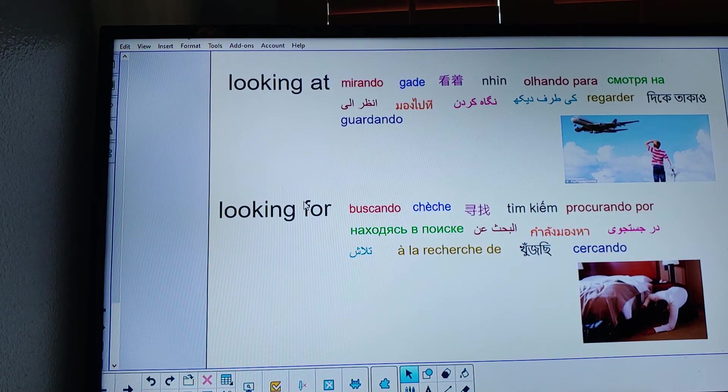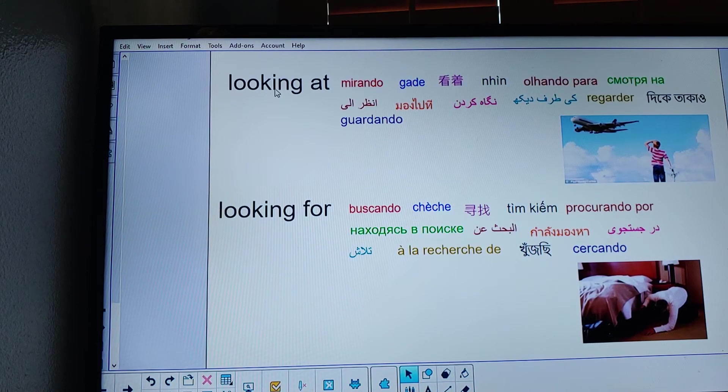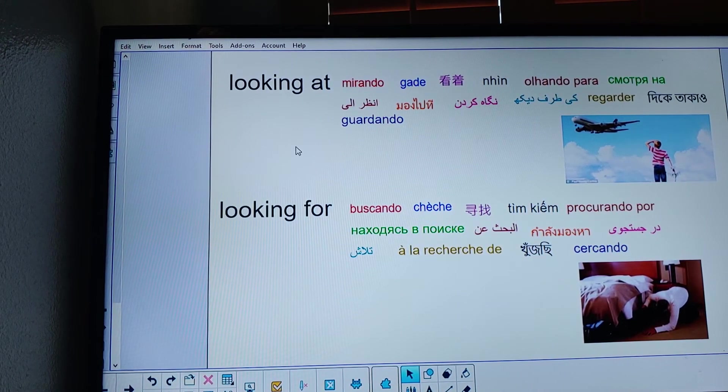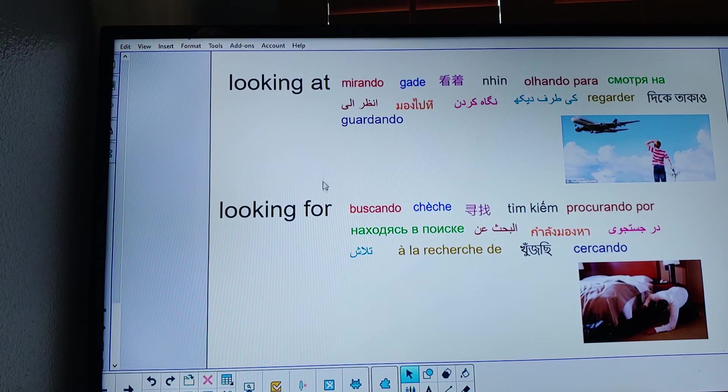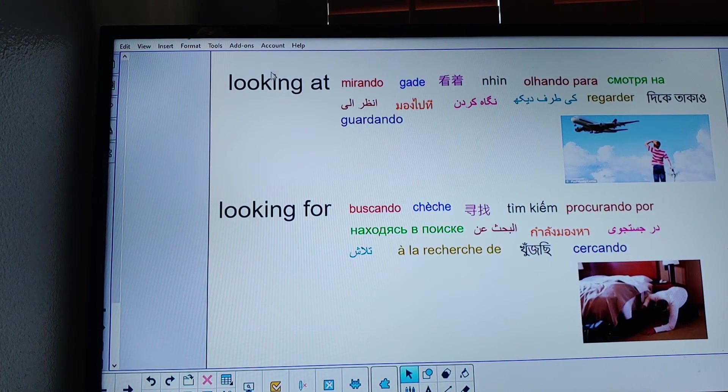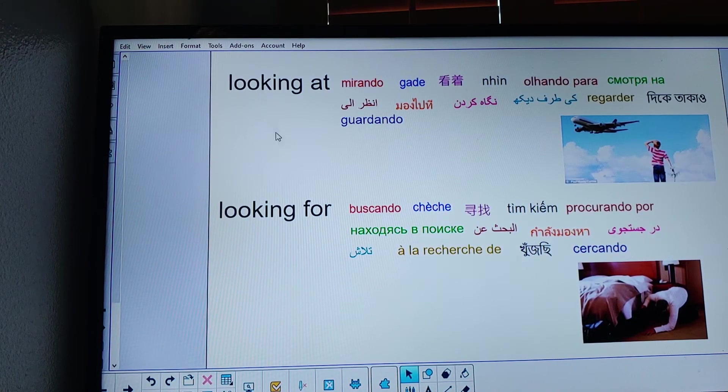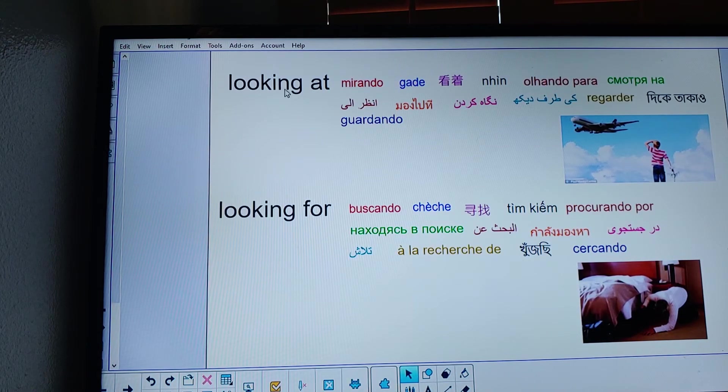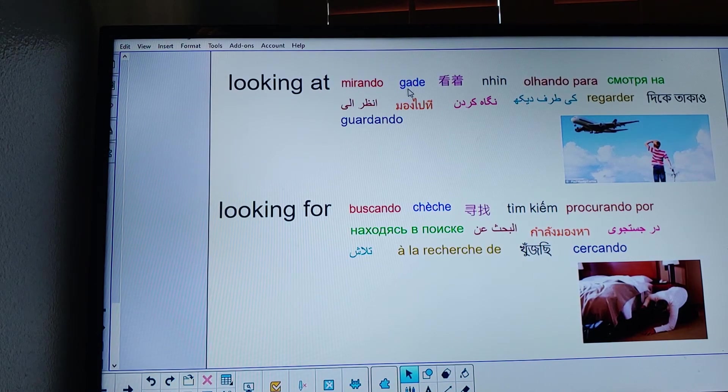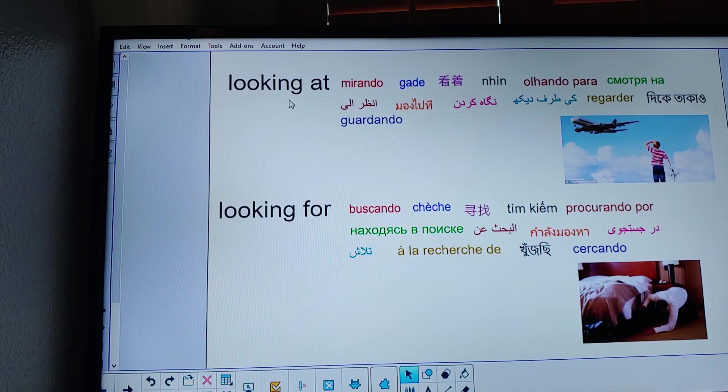This is a little bit confusing for people that do not speak English. We add a word behind the verb to change it from one verb to a different verb. Looking, mirando, looking. I'm looking at the plane. Looking at. Mirando a. Looking at.